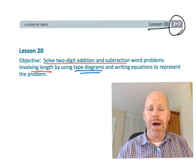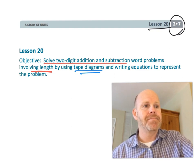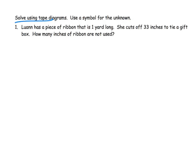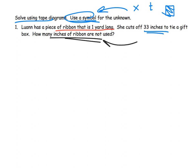Let's get started. The directions say solve using tape diagrams and use a symbol for the unknown. So parents and teachers we're going to use like an x or a letter t or something like that to represent the unknown rather than something like a box. So it says Luann has a piece of ribbon that is one yard long. She cuts off 33 inches to tie a gift box and the question is how many inches of ribbon are not used.